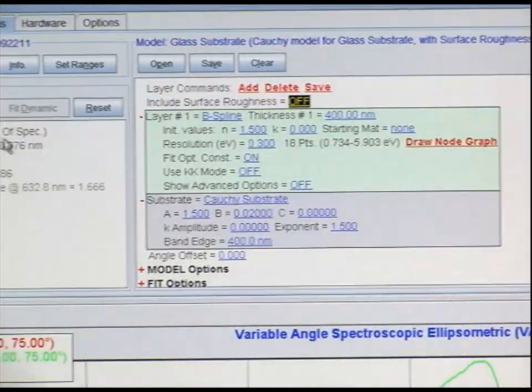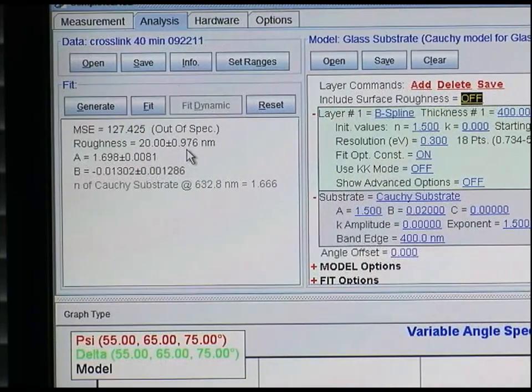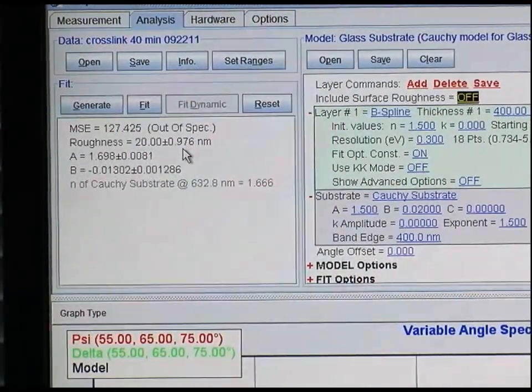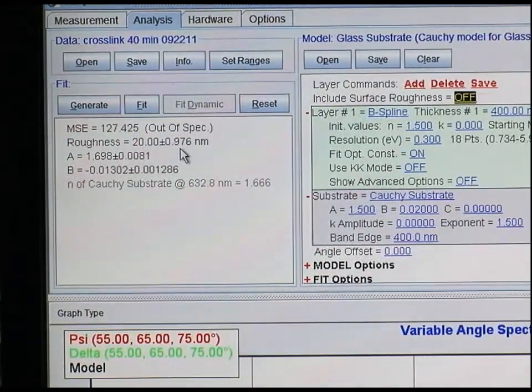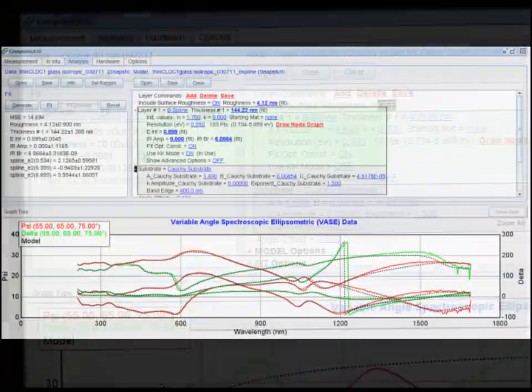So now what we would do is go through, generate a model, fit the model, and then tweak parameters until we obtain a model that we're happy with that successfully models our material.